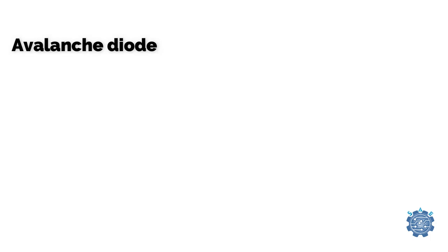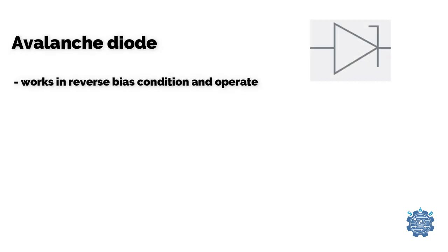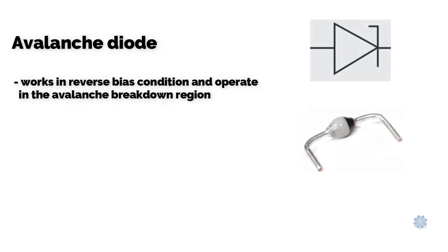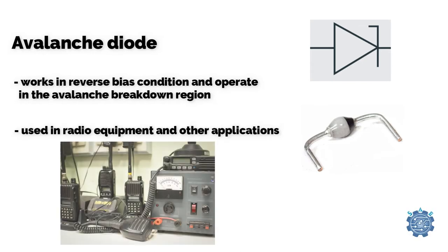Avalanche diode works in reverse bias condition and operates in the avalanche breakdown region. It is used in radio equipment and other applications.